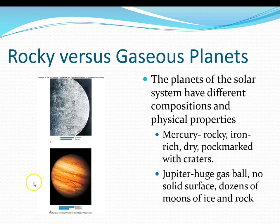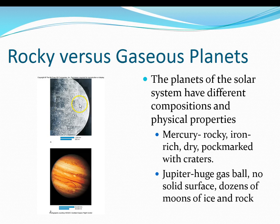The planets in our solar system have different compositions and physical properties. Looking at Mercury, it is rocky, iron-rich, dry, and has many craters. Jupiter, on the other hand, is very large, consists of gas, has no solid surface, and has dozens of moons of ice and rock. Being nearer to or farther from the Sun affects the composition of those planets.